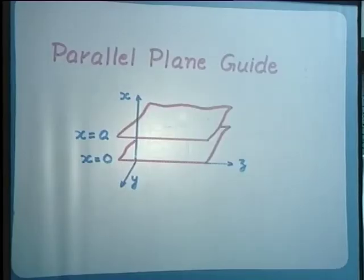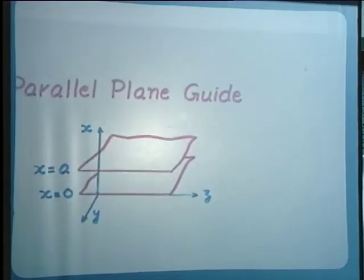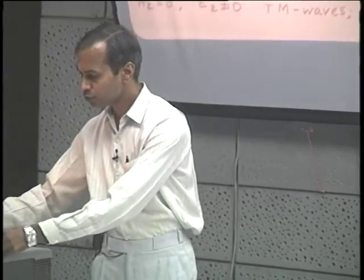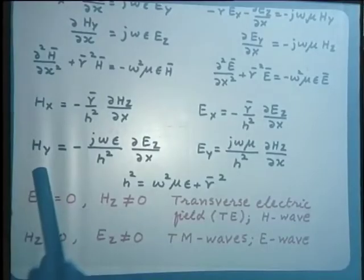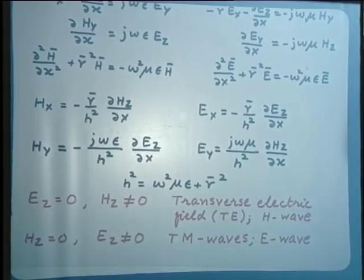The parallel plane guide structure we have been considering consists of infinite conducting planes placed at x=0 and x=A. For the perfect dielectric region between these two conductors, we have written down Maxwell's equations earlier and processed these to obtain expressions for the transverse field components Hx, Hy, Ex, and Ey in terms of the longitudinal field components Ez and Hz. From these expressions, we make out that in general one of Ez or Hz must be non-zero.